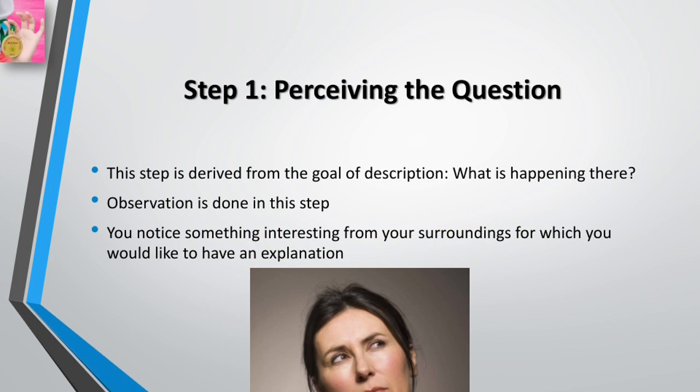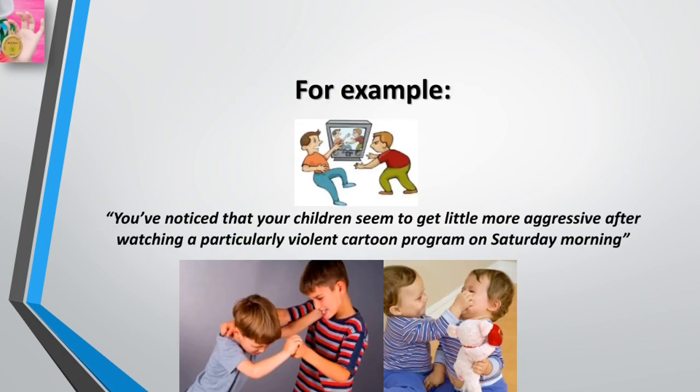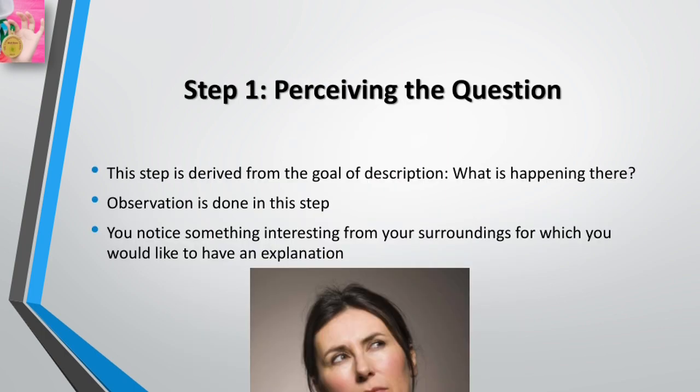The first step in an investigation is to have a question to investigate. You notice something interesting happening in your surroundings for which you would like an explanation. For example, you may notice that your children seem a little more aggressive with each other after watching particularly violent cartoon programs on Saturday morning. So you wonder if the violence in the cartoons could be creating aggressive behavior in your children. This step is derived from the goal of description: what is happening here?